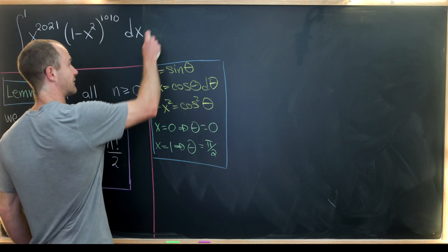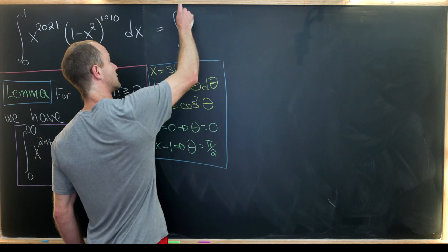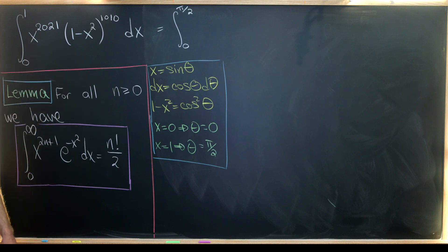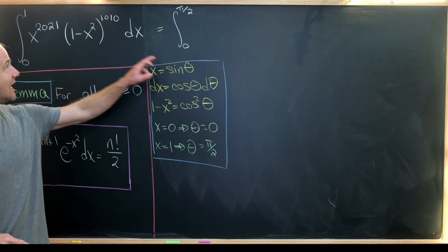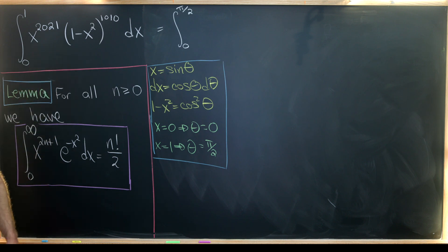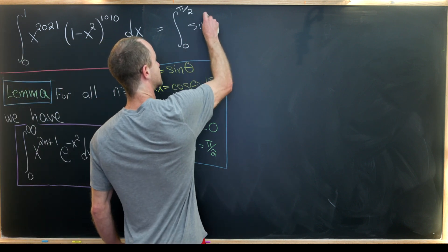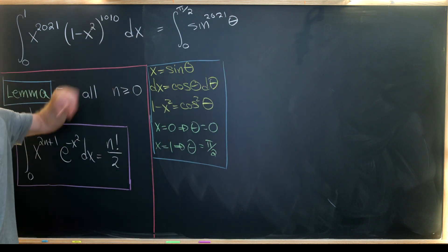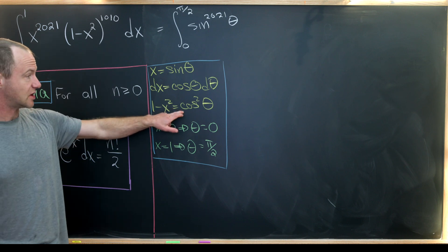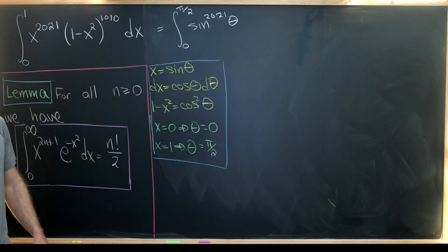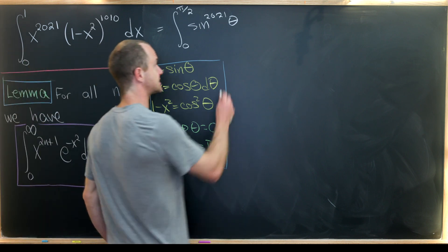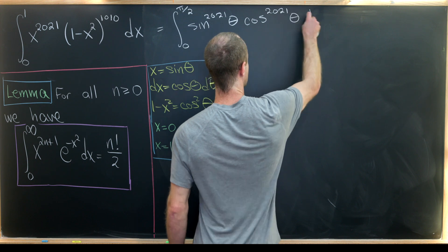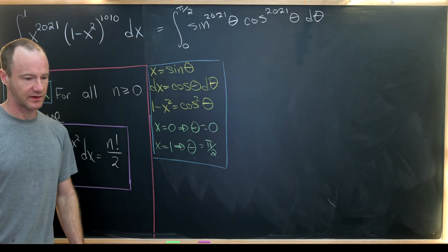So that builds out our substitution. We're left with the integral from zero to pi over two of sine to the 2021 theta times cosine squared theta to the 1010 — giving cosine to the 2020 — and then another cosine from the dx term, giving cosine to the 2021 theta d theta.